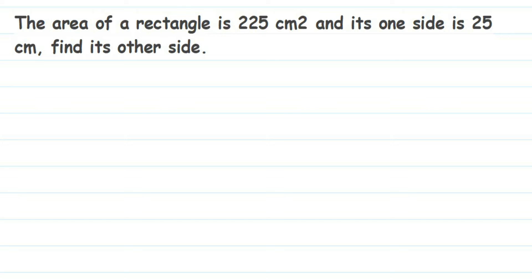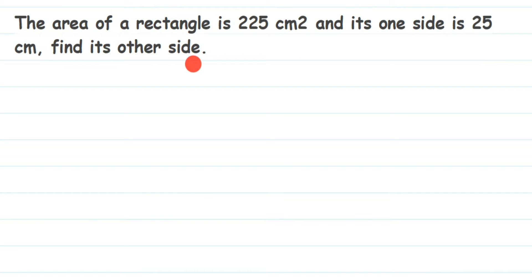In this question on rectangles, the area of the rectangle is 225 centimeter square. One side is 25 centimeter; find the other side. They have given the area and one side — not the length or breadth separately — just one side, and we have to find the other side. It could be either length or breadth.